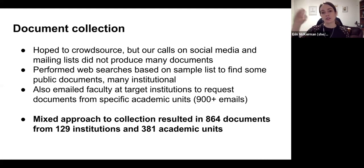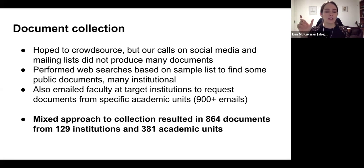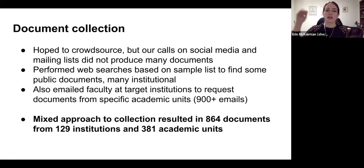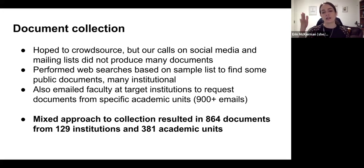Most of those public documents were at the institutional level — things like faculty handbooks. It didn't work as well for getting departmental-level documents. So what we decided to do was find public email addresses of faculty at those target institutions and email them to request documents from specific academic units. That was over 900 emails that we sent out — a pretty laborious process. But with that mixed approach — a little bit of crowdsourcing, systematic web searches, and targeted emails — we managed to eventually collect 864 documents from 129 institutions and 381 academic units.